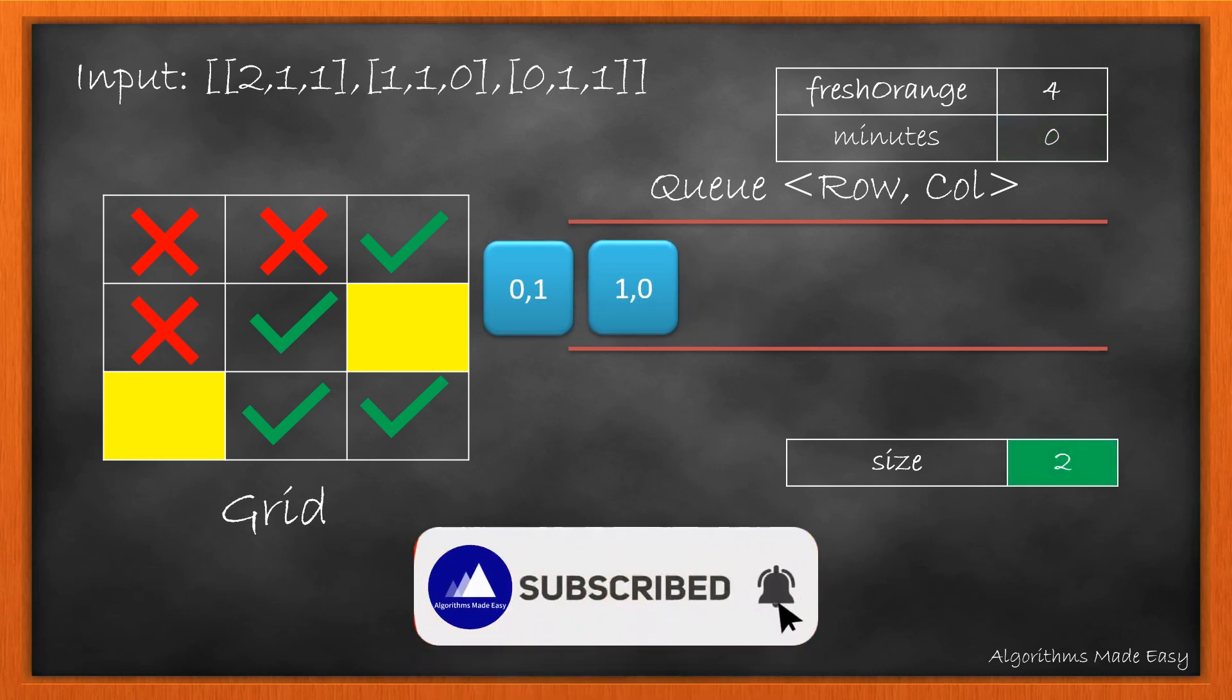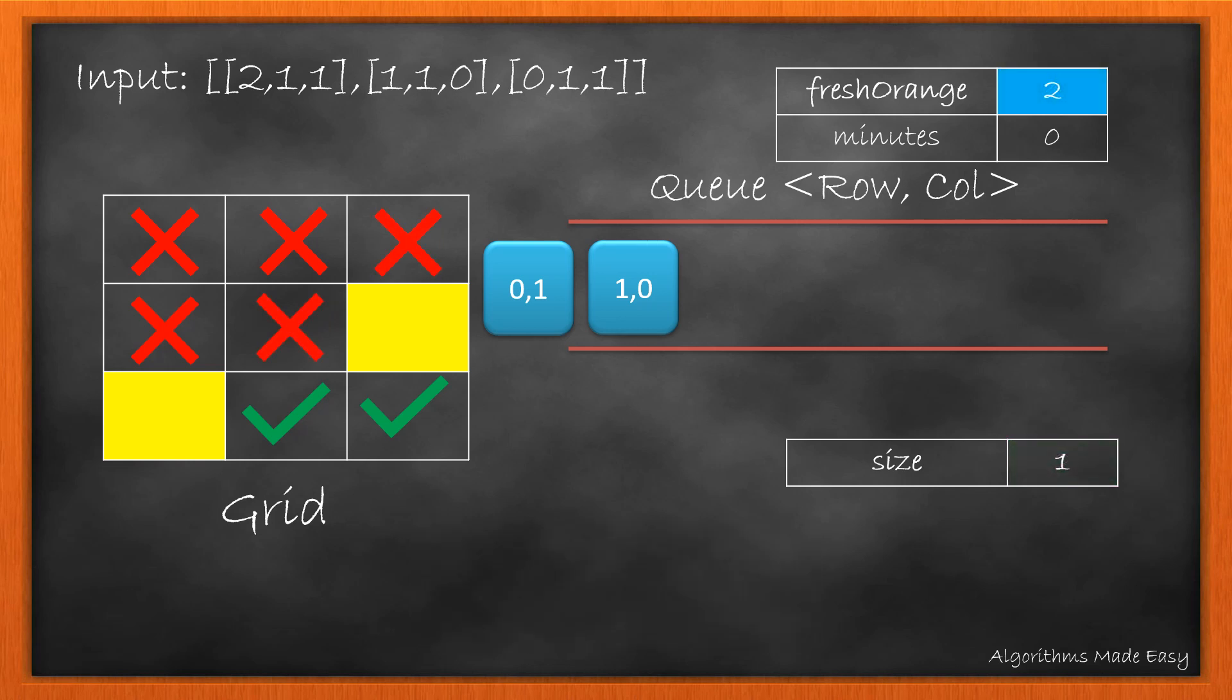We repeat the same steps, first by finding the size and then removing elements till the size is not 0. Then we update the fresh oranges to rotten while decrementing their count and adding their indexes into the queue. Now 1,0 does not have any fresh adjacent. So we move ahead and increment minutes. Continue with this loop till the queue becomes empty.